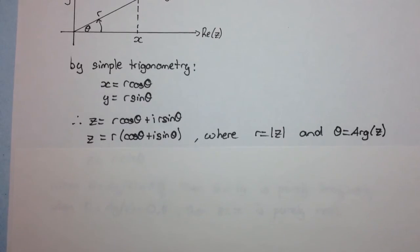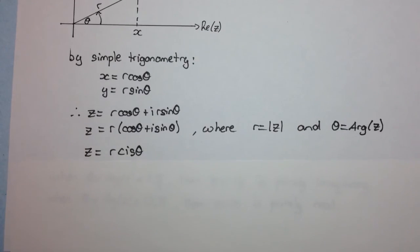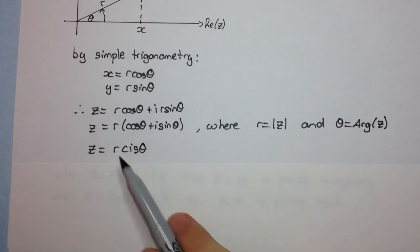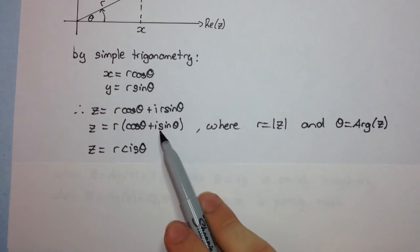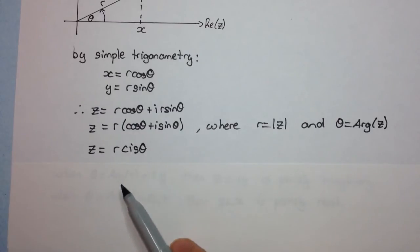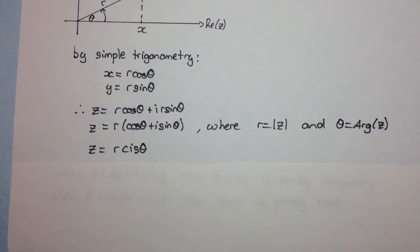And sometimes, you might see this written as r cis theta. And that's just for simplicity. We can write c from the cos and i sine as i s. And that's just, you know, for note, that's just another notation here.